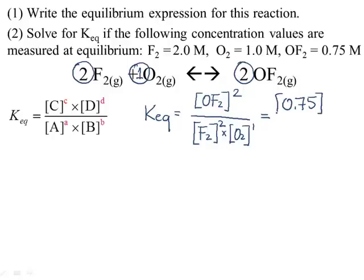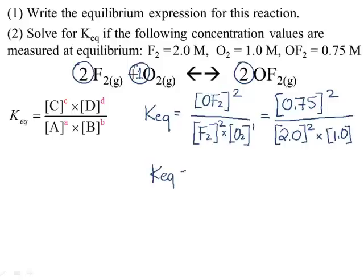For the equilibrium constant, OF2 is on top with a concentration of 0.75 molar, which I square. In the denominator, F2 has a concentration of 2.0 molar raised to the second power, multiplied by O2 at 1.0 molar raised to the first power. Working this out: 0.75 squared divided by 2.0 squared times 1 gives a final answer of approximately 0.14.